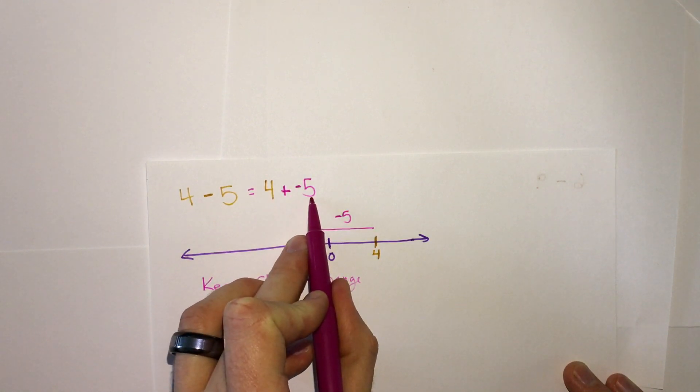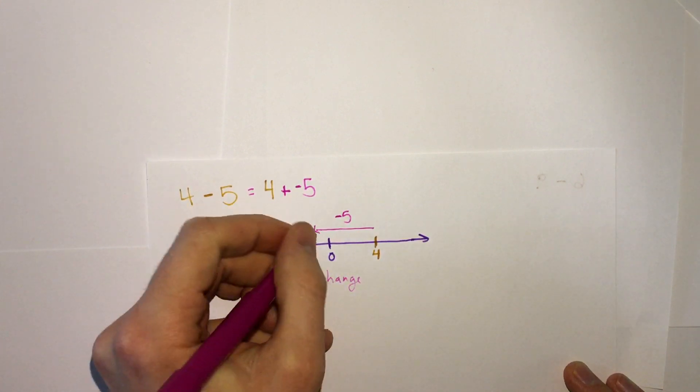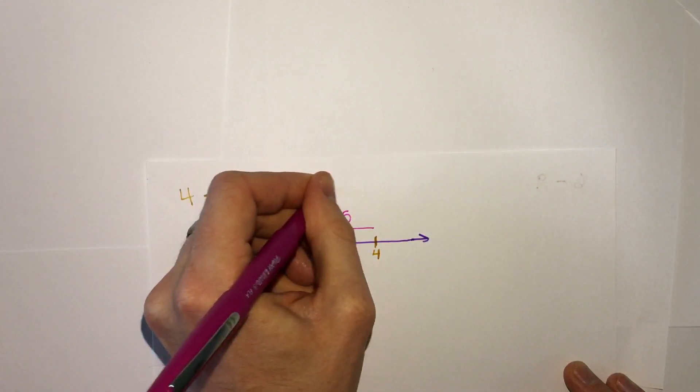4 plus negative 5. Well we know from our last one, we'd subtract 5 minus 4 is 1, the bigger one is negative, we get the same answer, negative 1.